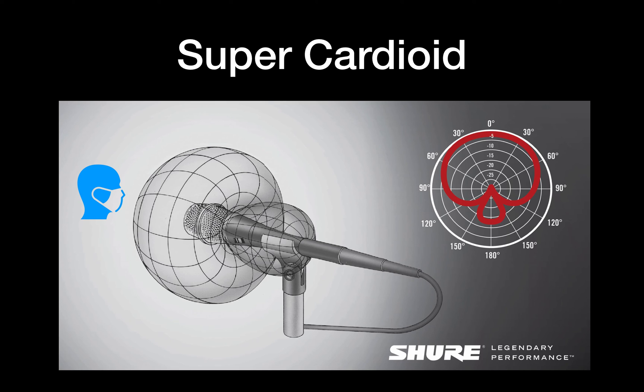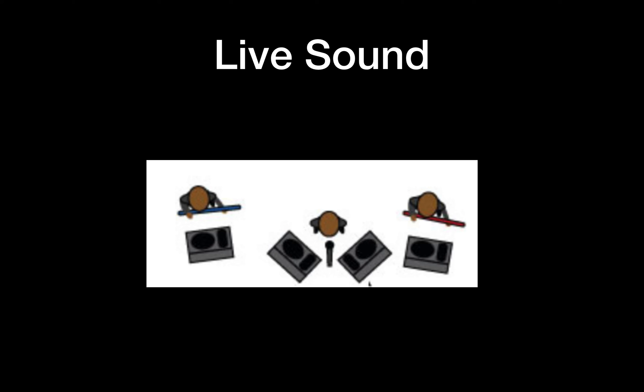Where this is good is in a situation that we see time and time again in live music. Here we have a singer and they have two monitor wedges on their left and on their right hand side. We also have other sounds on the left and the right coming from the bassist and the guitarist. This microphone here, if it was a cardioid microphone, some of the sound from the left and the right would be entering the microphone.